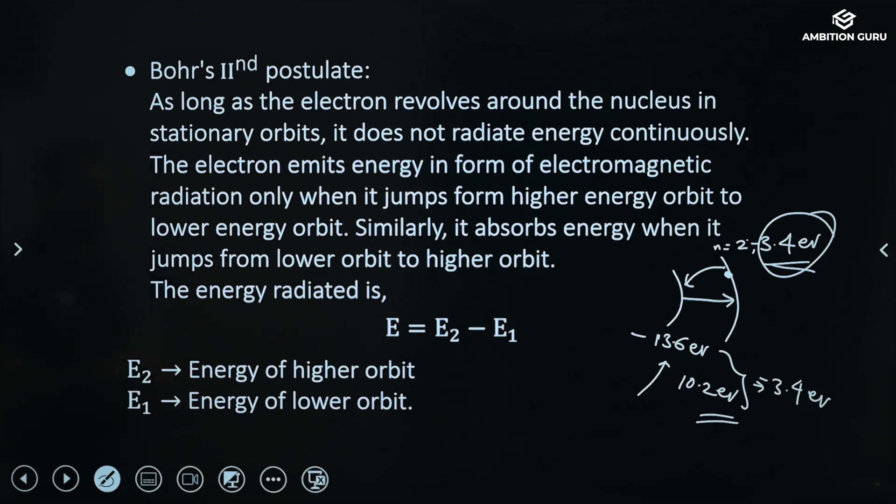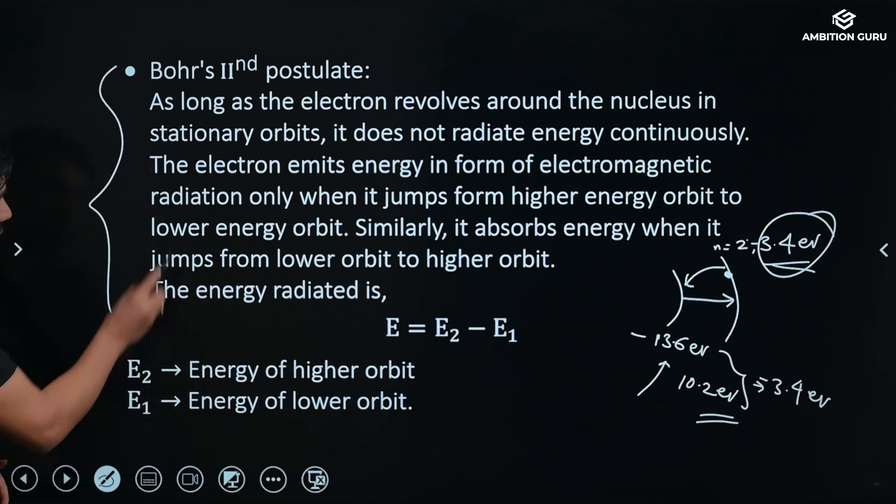When an electron jumps from a higher energy state to lower energy state, it emits the radiation or it emits energy in form of radiation. This is the second postulate of Bohr.